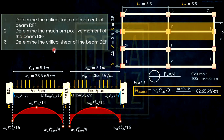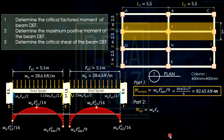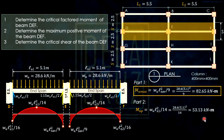For question 2 — the maximum positive moment — both spans have the same value, so we use W·LN²/14 (end span, integral with column support). LN1 = LN2 = 5.1 m, so either can be substituted. If the spans were different lengths, we would use the larger LN to get the maximum positive moment. Substituting gives the answer.